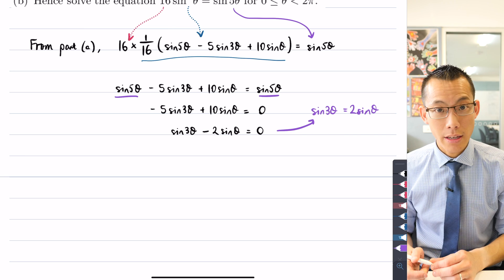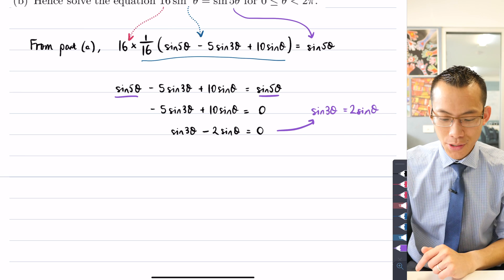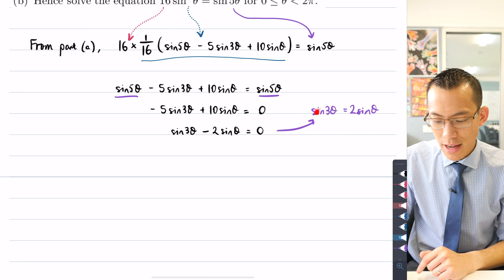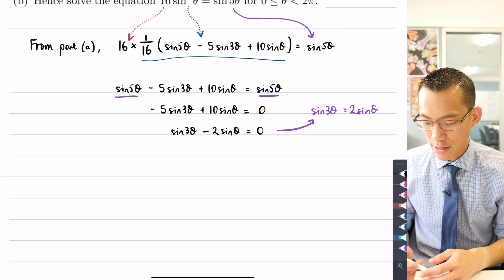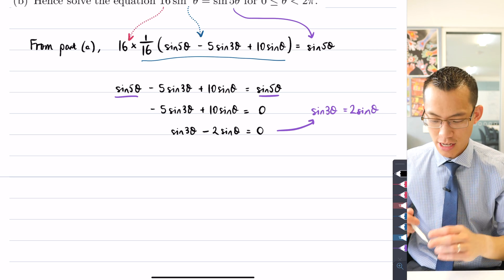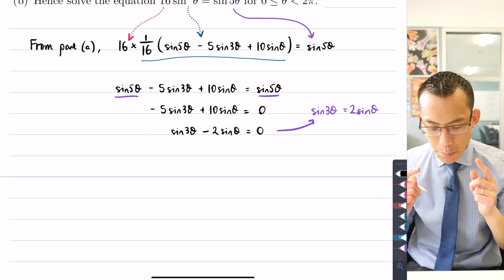And this is going to be really useful for me later on because I have a really good sense of what sin 3θ and 2 sinθ, what they actually look like. So I'm going to use that as sort of an error checking method for me later on.